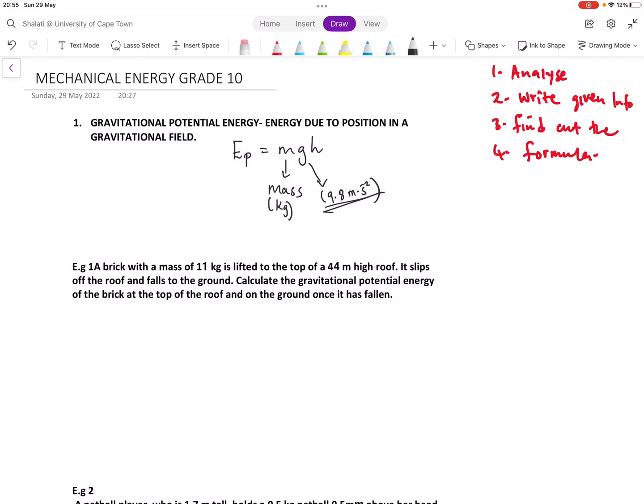Then h stands for height. This will be the height and the reference point will be the ground since we're dealing with gravitational energy. We'll take the ground as our reference point, which means every time we measure the height, we'll have to start from the bottom, from the ground. And this gravitational potential energy is measured in joules. You can't do any calculations without using the correct units.